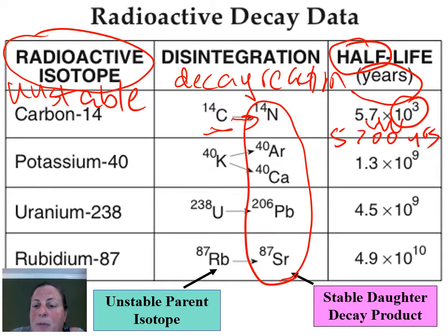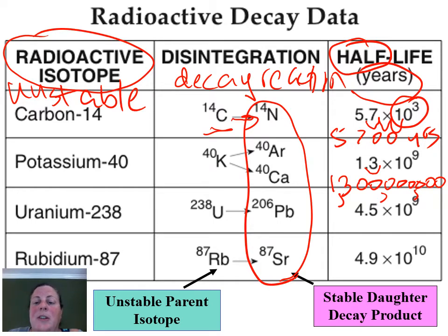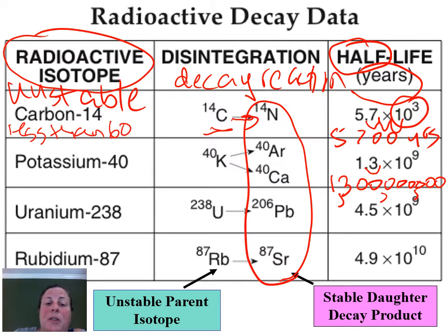In the case of potassium-40, it takes 1.3 times 10 to the 9 years. So we move our decimal 9 places to the right, meaning we're going to have 8 zeros after this 3 — giving us 1,300,000,000 years. As we go down this list, each of them takes a little bit longer. Carbon-14 is most useful for fossils or rocks that are less than 60,000 years old, because it breaks down pretty quickly compared to the others. So this is used for recently living isotopes, rocks, and fossils.